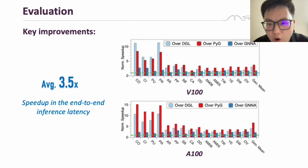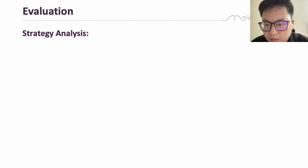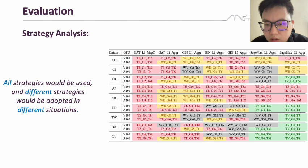We further conduct the strategy analysis. In the table on the right, different colors correspond to different coarse-level strategies. We can observe that all strategies would be used, and different strategies would be adopted in different computational scenarios. This further proves the variability of GNN computation and the necessity of constructing the strategy space in UGraph.